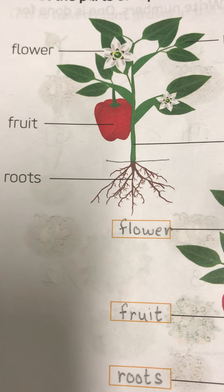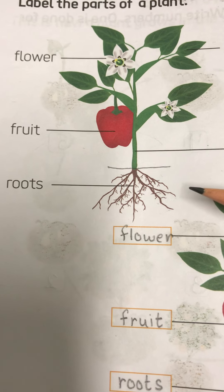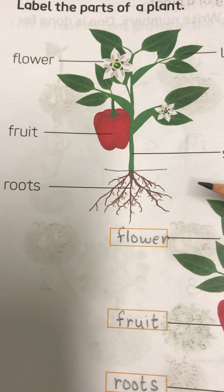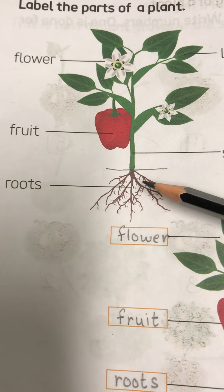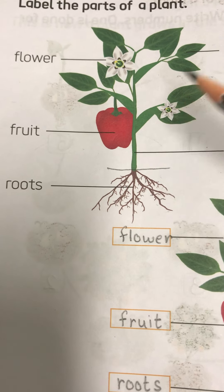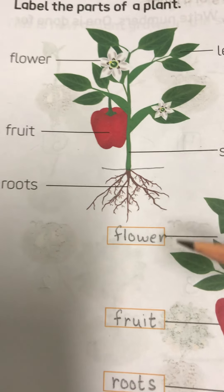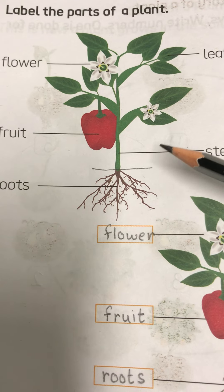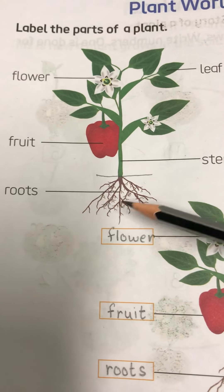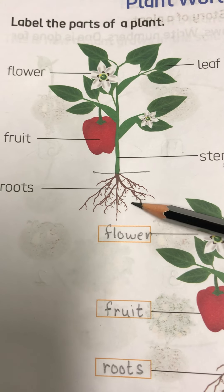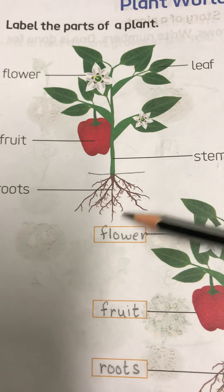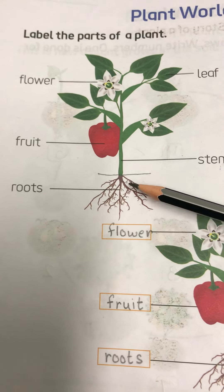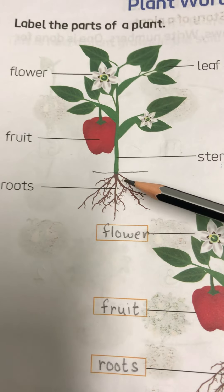For the growth of any plant, we water it daily. Watering is very important for the growth of the plant. The roots absorb that water and then the water goes to other parts of the plant. And which part carries the water and nutrients to other parts of the plant? It is the stem. The roots absorb the water we give to the plant and then the stem carries it to the other parts.